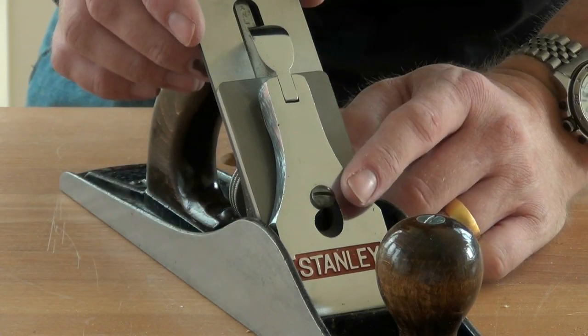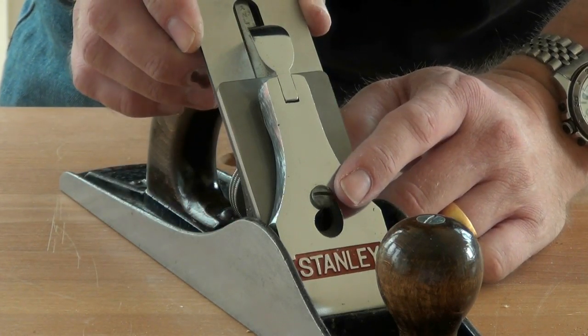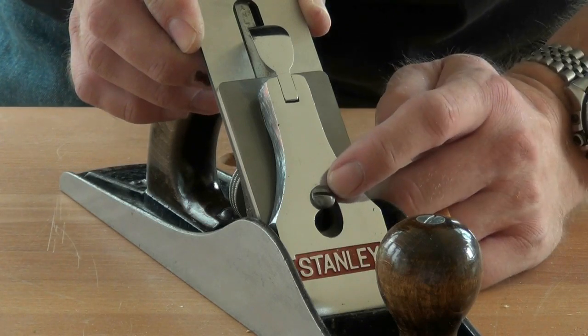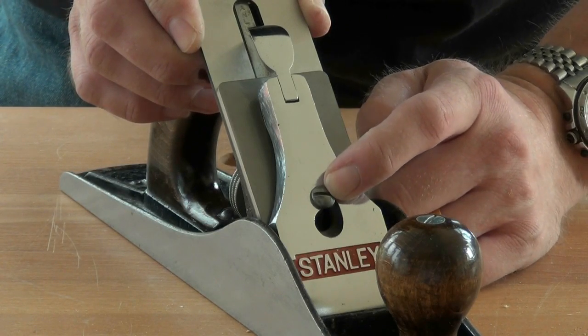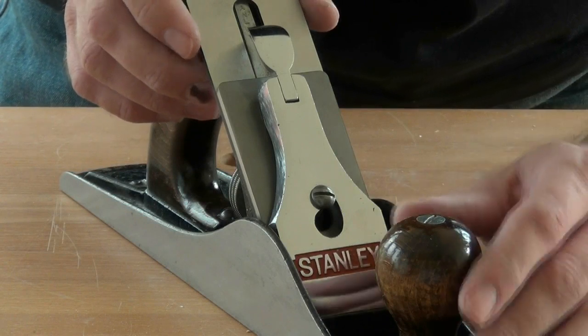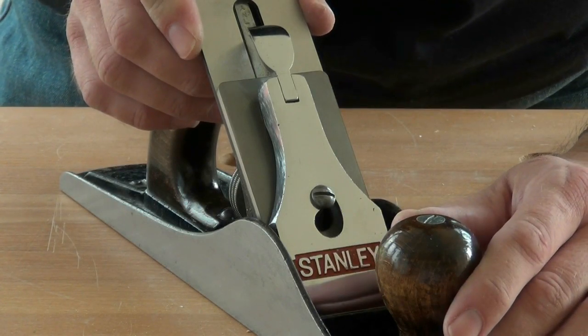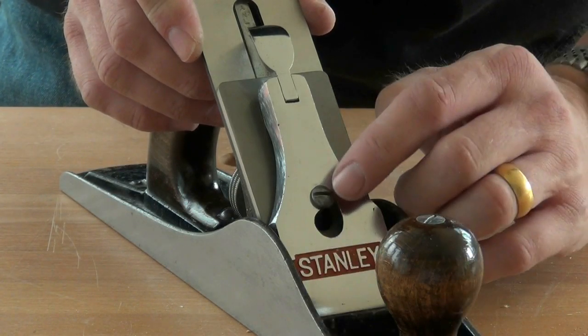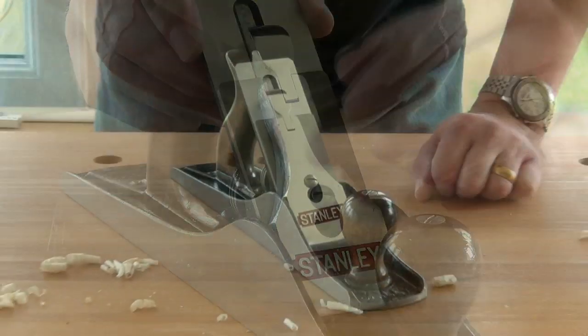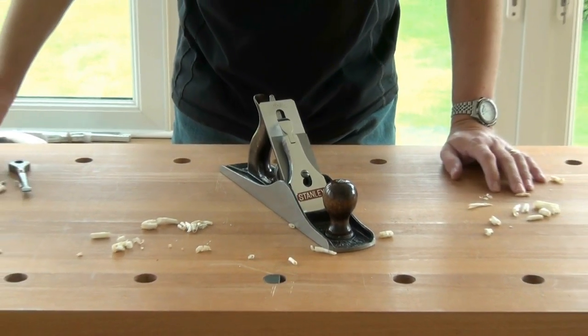If you find those adjustments are too difficult or too hard to make, slacken off this screw slightly. If the whole assembly moves when you use the plane, then you'll need to tighten that a bit. You should find your plane is now ready to use.